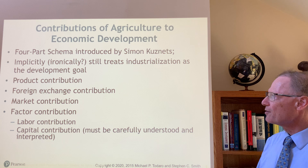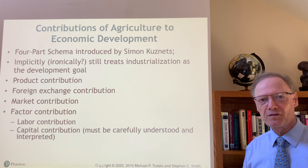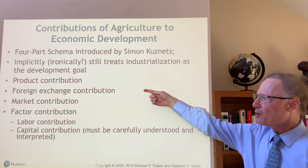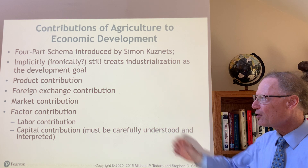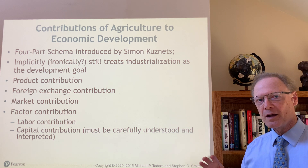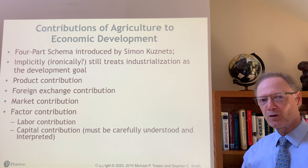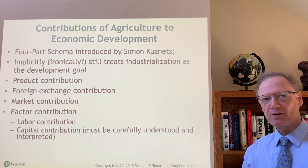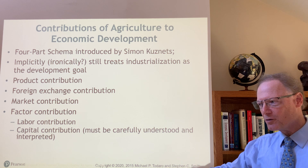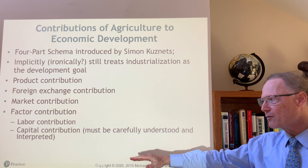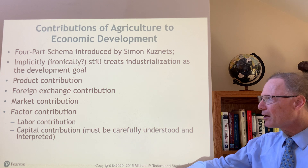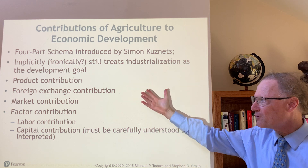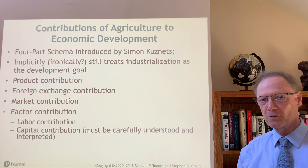Despite this focus on industrialization, he still gave central importance to agriculture in making that process possible. The first was the product contribution — perhaps easiest to understand — that products grown in the agricultural sector, ranging from cotton used for manufacturing shirts to foods used in the food processing industry, represent direct physical contributions of agriculture to industry.